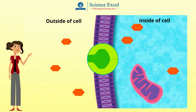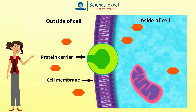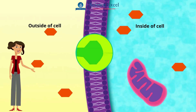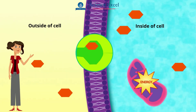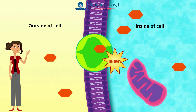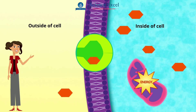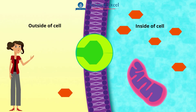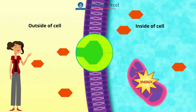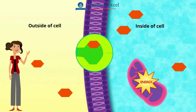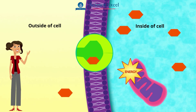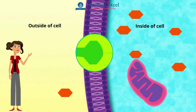Active transport is carried out by special protein carriers within the cell membrane and they have a specific binding site for the exact molecule they are transporting. These proteins pick up substances — for example glucose molecules — from outside the cell and then change shape in a way that they push the molecule through the cell membrane into the cytoplasm of the cell. The energy in the form of ATP needed for this is provided by respiration in the cell, and this change of shape pushes the glucose molecule being transported into the cell.